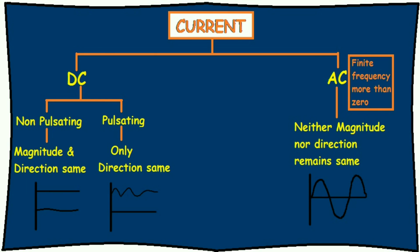The current can be of two types. Direct current or alternating current. Direct current is the current in which the direction of the current does not change. In alternating current, the direction of the current changes with time. Direct current is of two types, non-pulsating and pulsating. Non-pulsating DC, magnitude constant, direction doesn't change. Pulsating DC, direction is constant, magnitude changes. In AC, neither magnitude nor direction remains the same. That is both change.